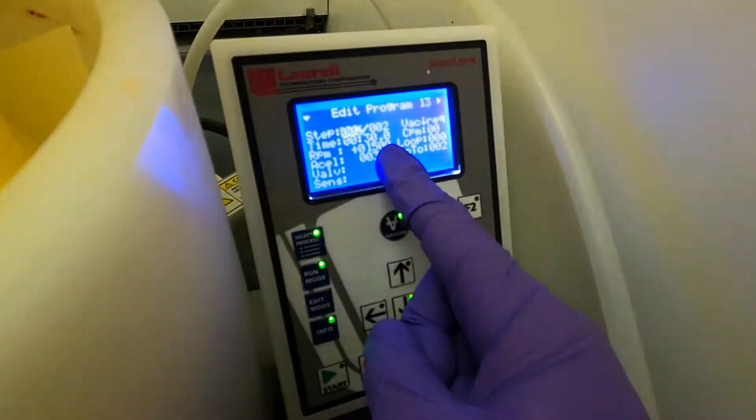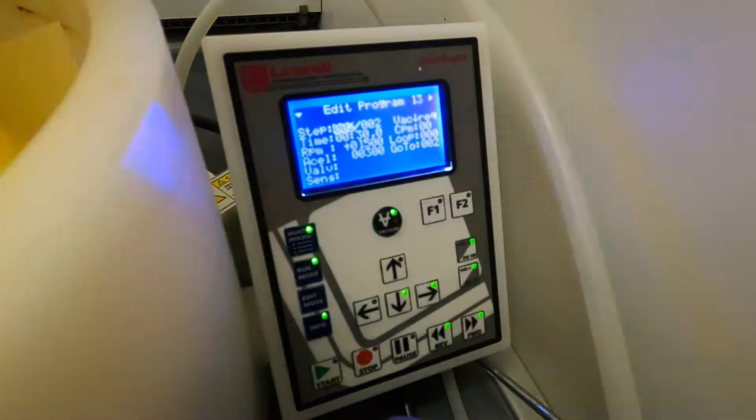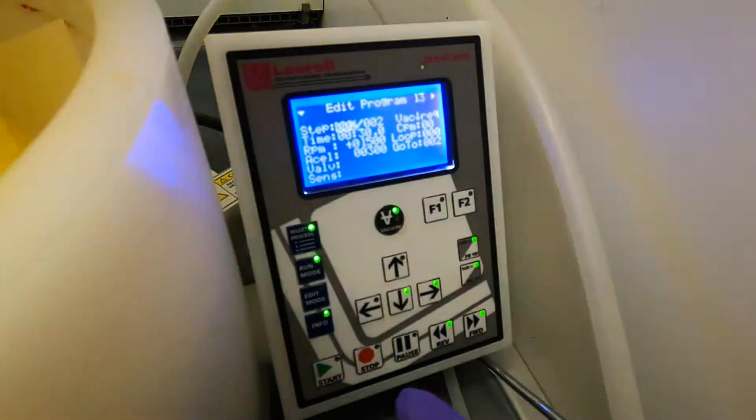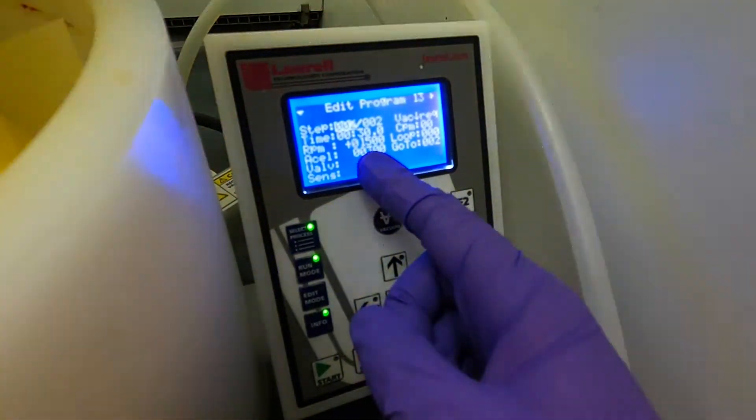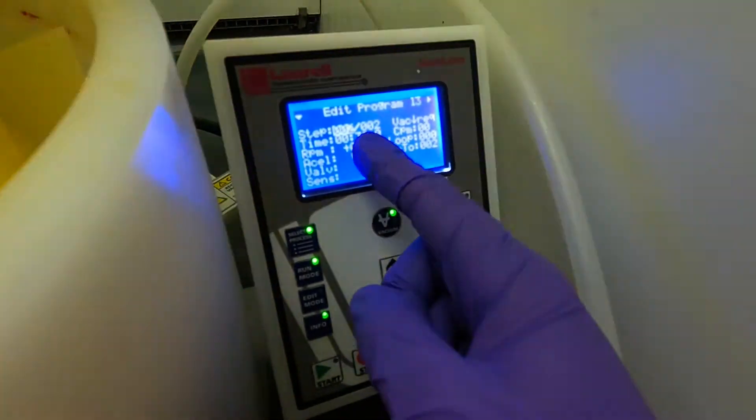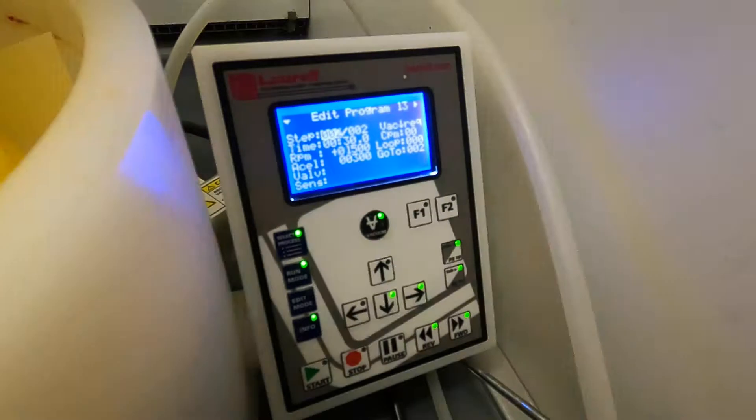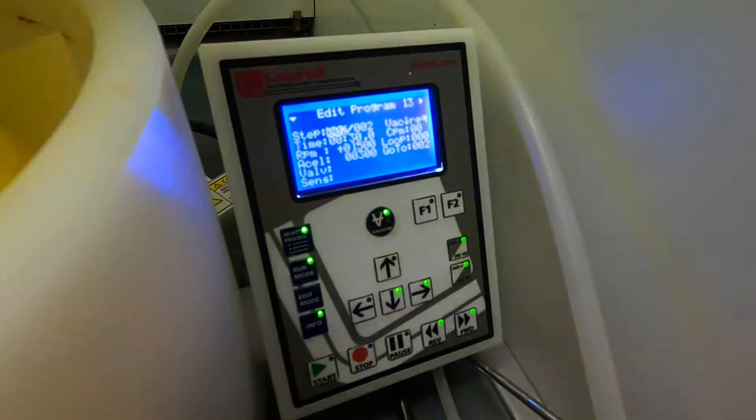This speed of 1500, this is something that I set to get the thickness that I want. But if you want to tweak the thickness you will need to change this number. Always make sure that if you go to high spinning speed, because the acceleration has a finite value, you might have to increase the spinning time to allow enough time for the spin coater to accelerate to the rpm setting that you want.